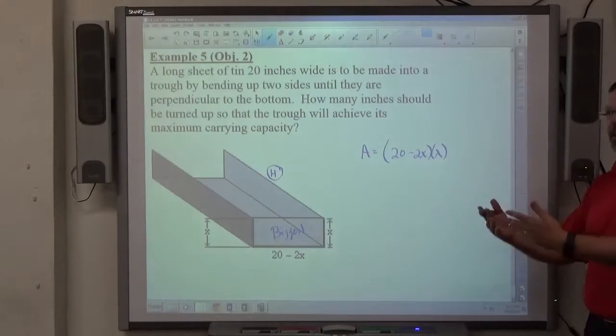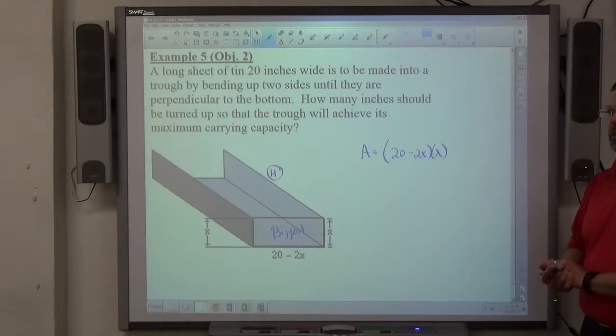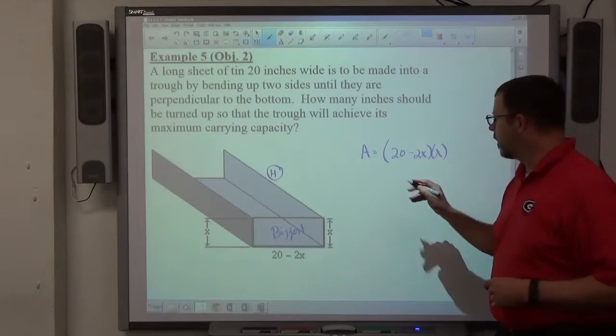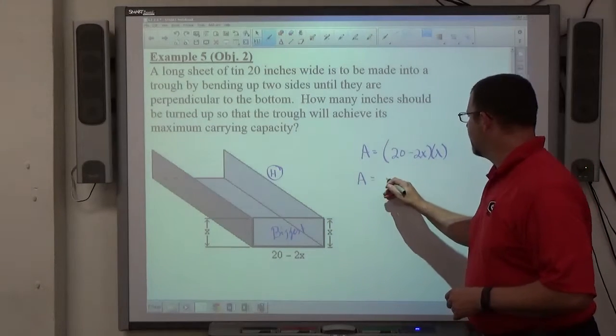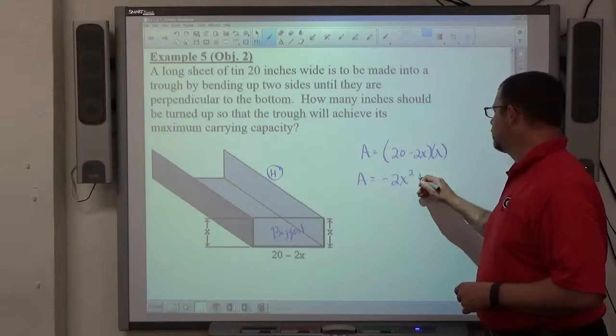To get it looking like the last two problems, I want to multiply that out in general form. So the area formula is going to be negative 2x squared plus 20x.